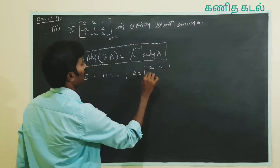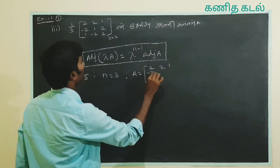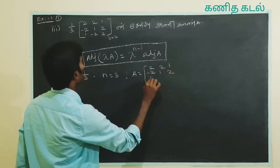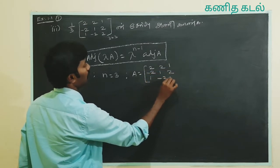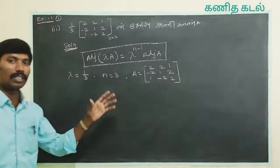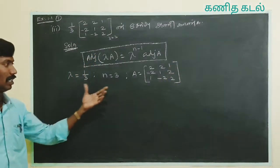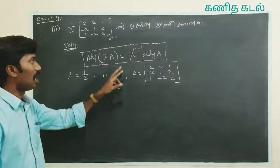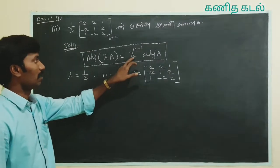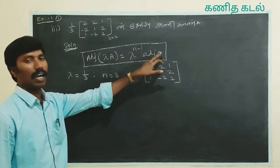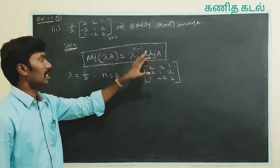Then A is: 2, 1, minus 2, 1, 2, 1, minus 2. So this is how we can do the formula. Now the formula is lambda power n minus 1 into adjoint A, so we can substitute it.